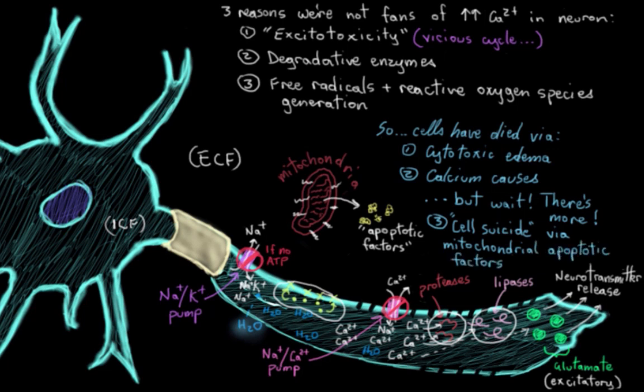So there's a look at some of the major events that happen as part of the ischemic cascade and three ways that cells might die as a part of the ischemic cascade.